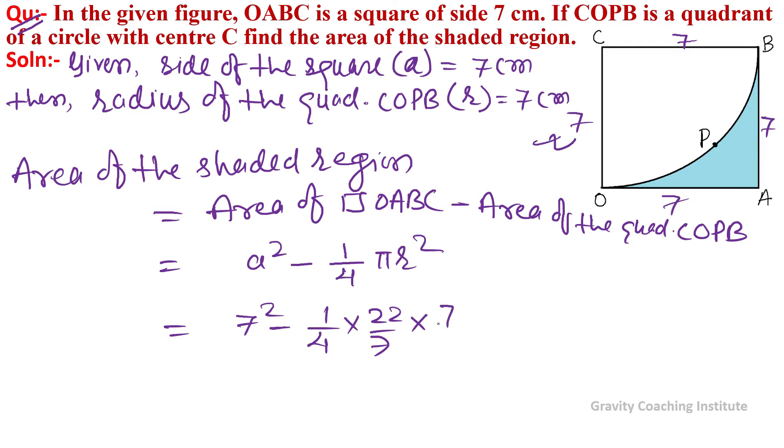Seven times seven cancels, giving 49 minus 22 times 7 over 4, which is 49 minus 77/2. Converting to common denominator: 98/2 minus 77/2 equals 21/2, which is 10.5 square centimeters.